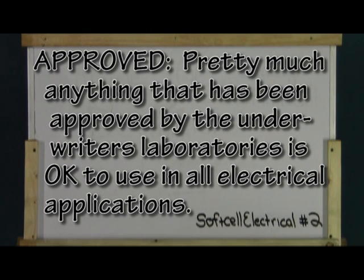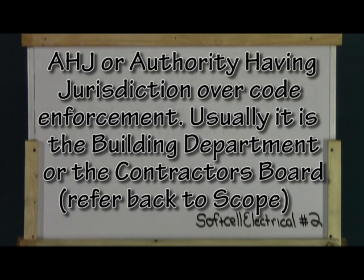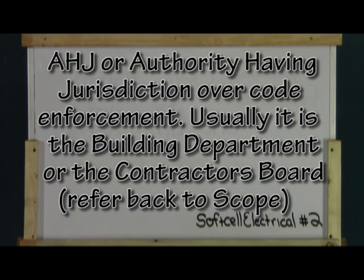Next is approved. This just means that the building department or the contractor's board says it's okay to use it, or any other governing authority. We move on to the AHJ, or Authority Having Jurisdiction. As far as the NEC is concerned, the AHJ is usually going to be the contractor's board or the city building and safety department, which issues permits and does inspections.